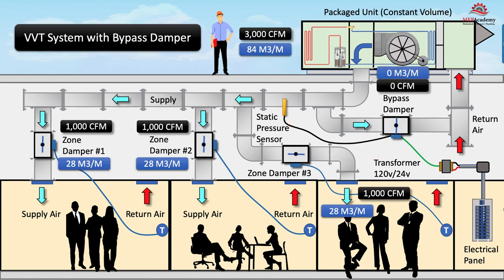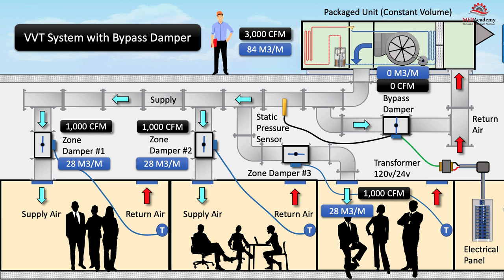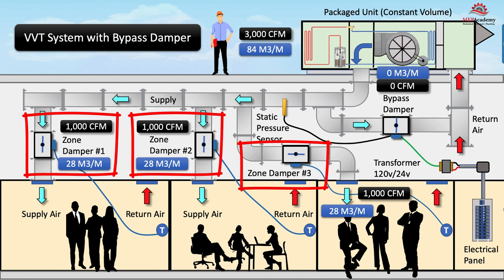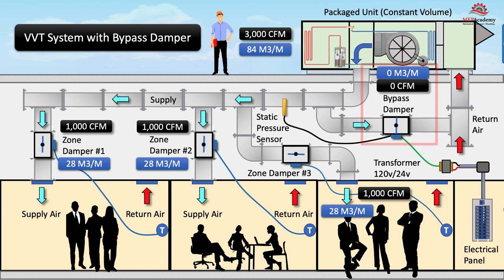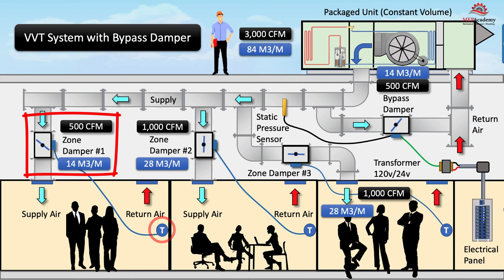Consider an example using a 3000 CFM (84 cubic meters per minute) constant volume air conditioner with three zones, each sized for 1000 CFM (28 cubic meters per minute) at peak load. The bypass damper is closed because all of the air conditioner's air is being delivered to the zones.